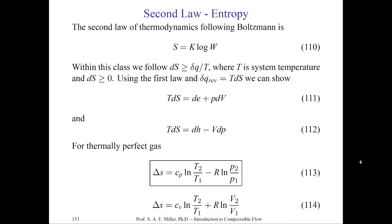For thermally perfect gases, we can write the important equations 113 and 114: the change of entropy goes as C_p times the natural log of the temperature ratio from state 1 to 2, minus the gas constant R times the natural log of the pressure ratio from state 1 to 2. We can also rewrite this in terms of volumes: delta S equals C_v times the natural log of T2 over T1 plus R times the natural log of the change in volumes.